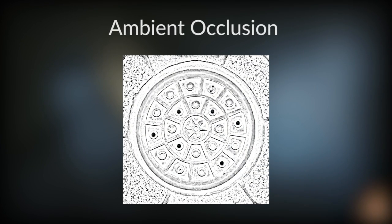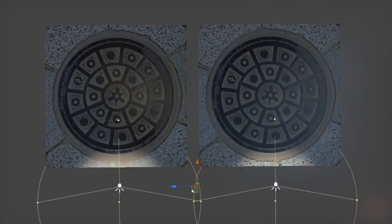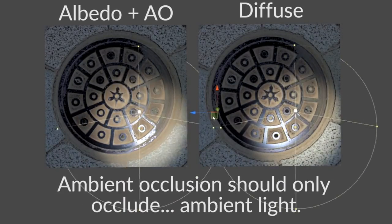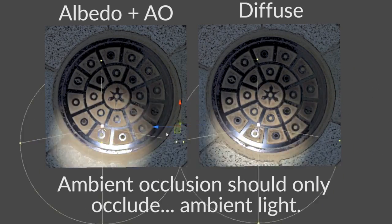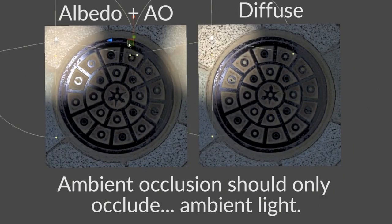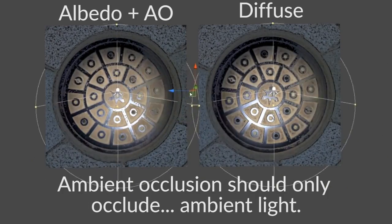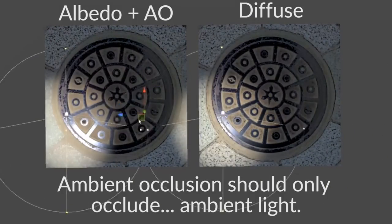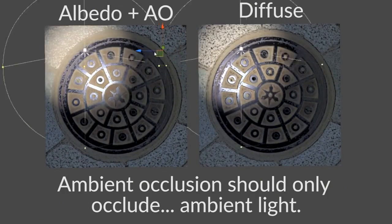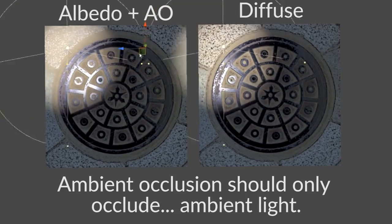Lastly, an ambient occlusion map helps make up for the lack of lighting details in the albedo map. Separating the ambient occlusion from the albedo map in a game engine helps the light look a little bit more natural. Ambient light is occluded in those areas, but dynamic lights, like a character's flashlight, won't be blocked. This type of map is only really needed for real-time games, because animation renderers like Cycles will calculate this type of occlusion automatically along with global illumination.